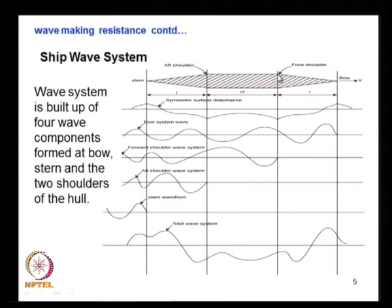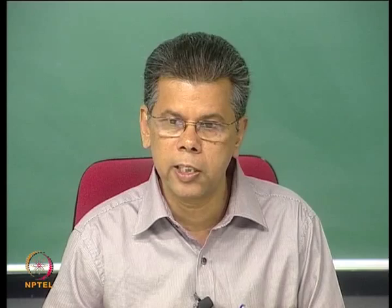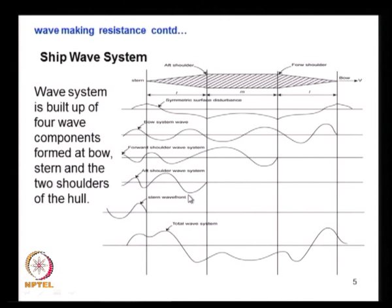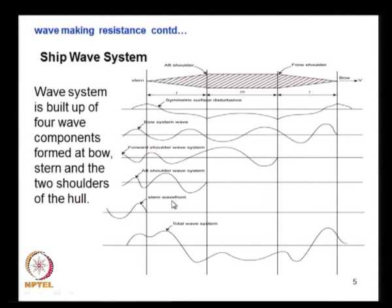At the forward shoulder point, velocity is higher and pressure is low, so the wave originating from there starts with a trough and propagates backward. At the aft shoulder, again velocity increases and pressure drops, so the wave system there also starts with a trough. Finally at the stern — aft stagnation point — pressure is high, so the wave starts with a crest. These are the four wave components used to explain the total resultant wave system generated by a ship.